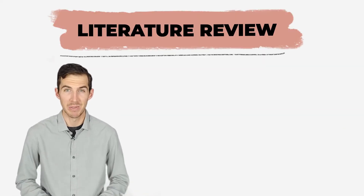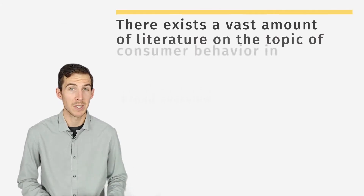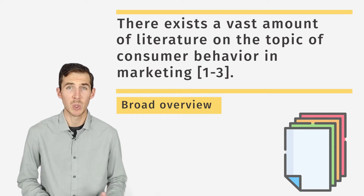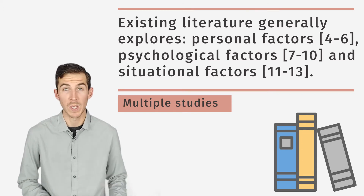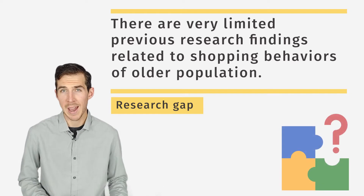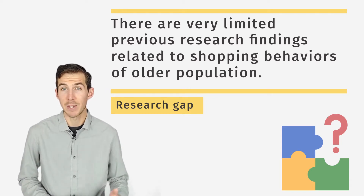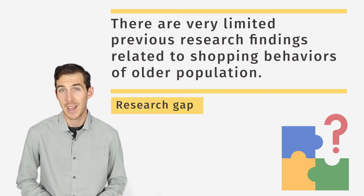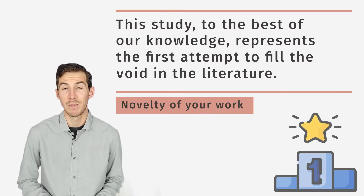Now let's move on to the literature review. A literature review is an overview of previously published works related to your topic. Let's start with a broad summary of the previous research activity in this field. We are saying that the topic of consumer behavior is well studied, then grouping prior research into three main categories. This statement is a good example of how to condense and summarize the findings of multiple research papers in one sentence. Now it's time to establish the research gap — an unexplored or understudied area in the literature. We are saying that there are very limited studies focusing on the consumer behaviors of the elderly population, and we are trying to address this particular gap. Then we talk about the novelty component: to the best of our knowledge, this is the first study to investigate this particular issue.